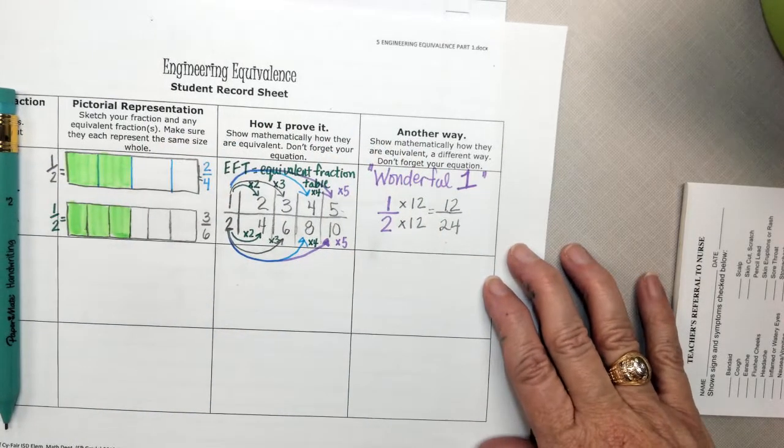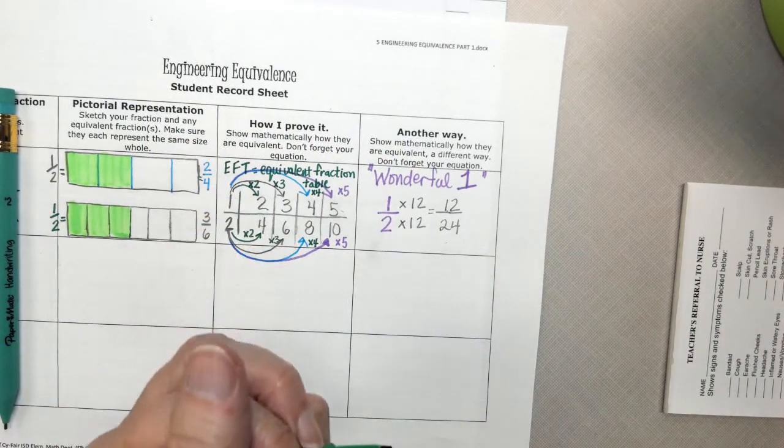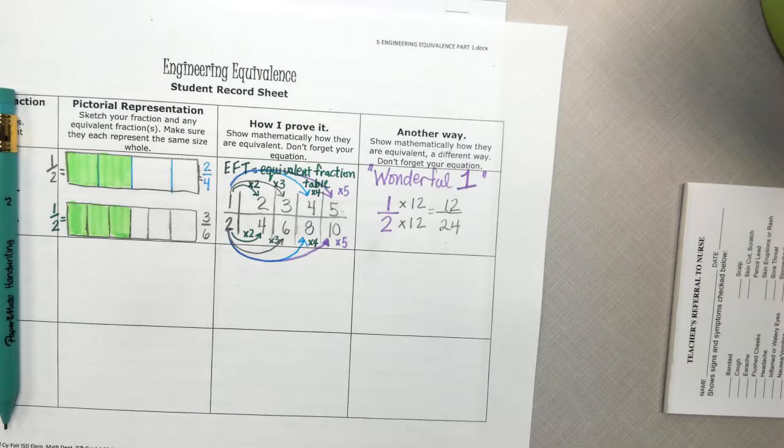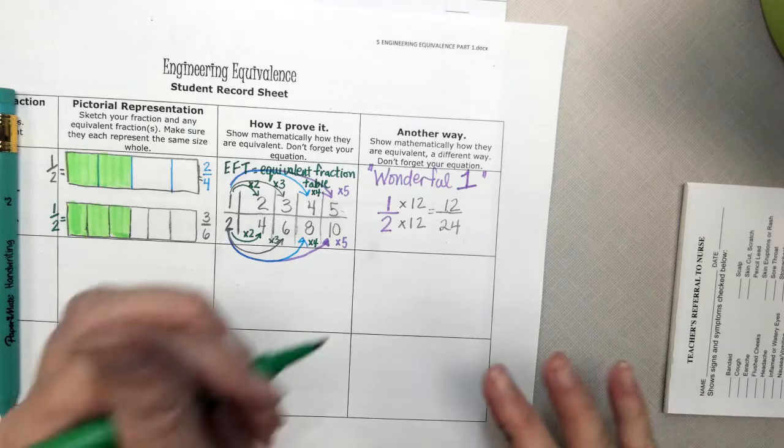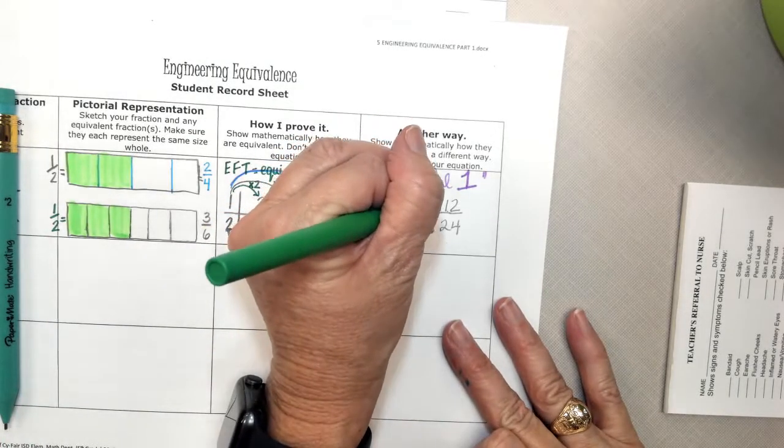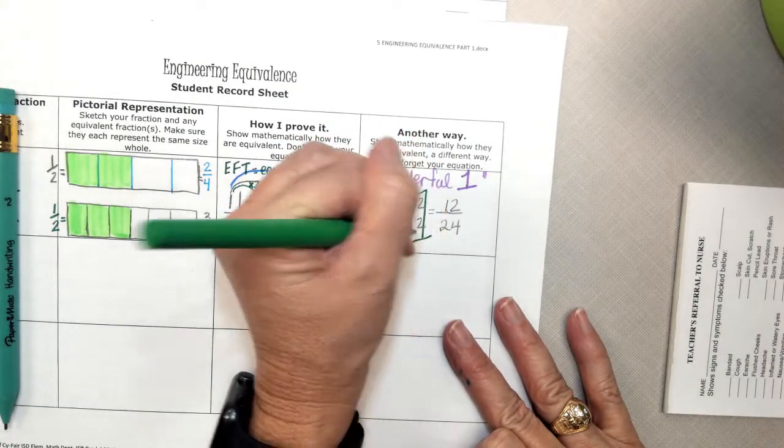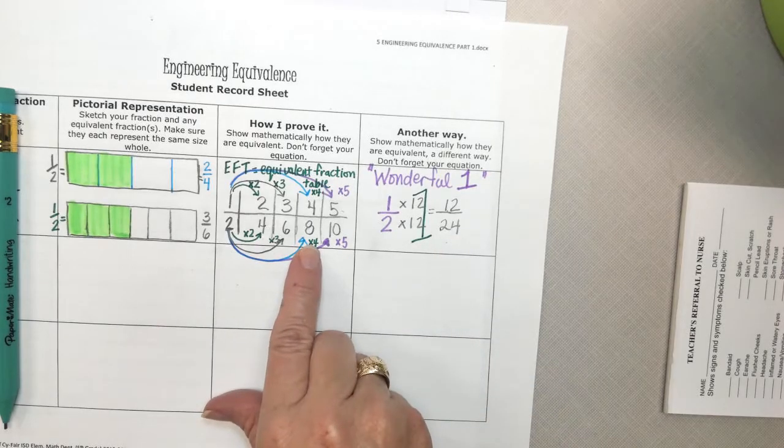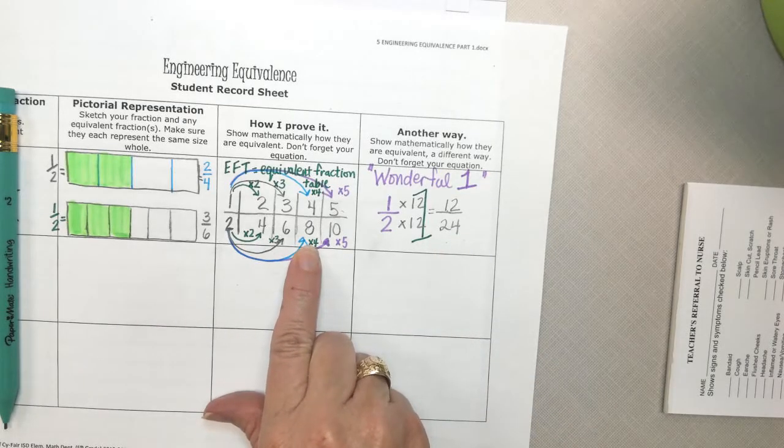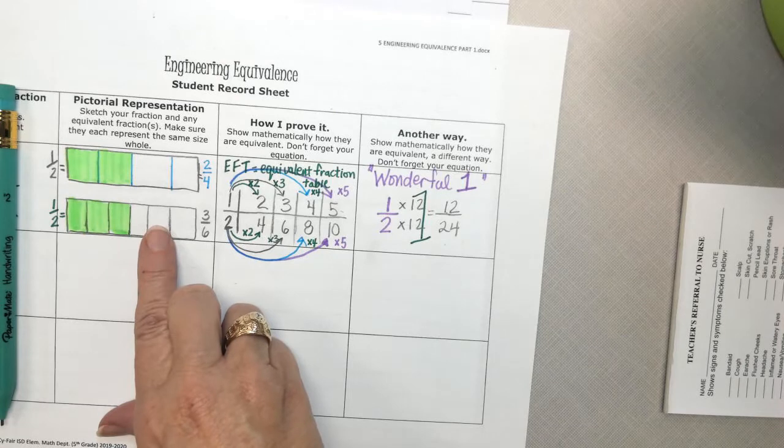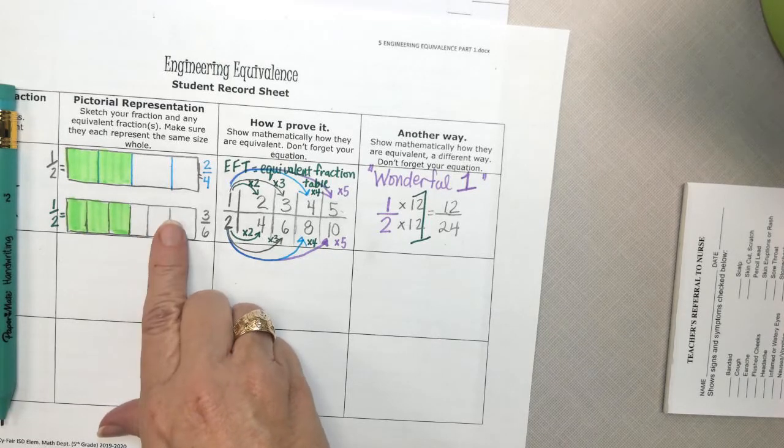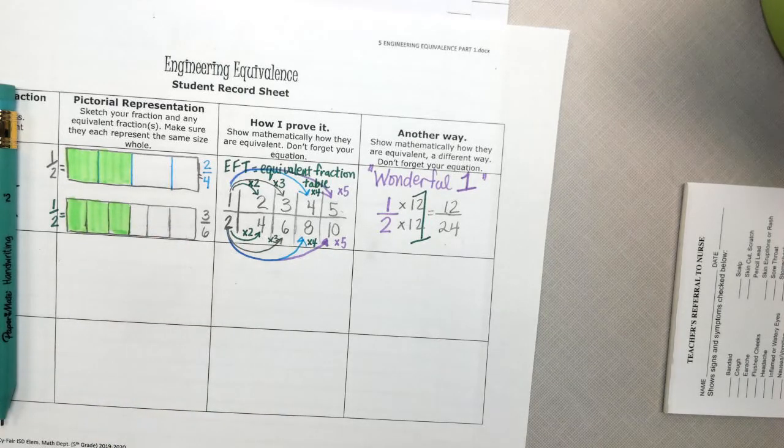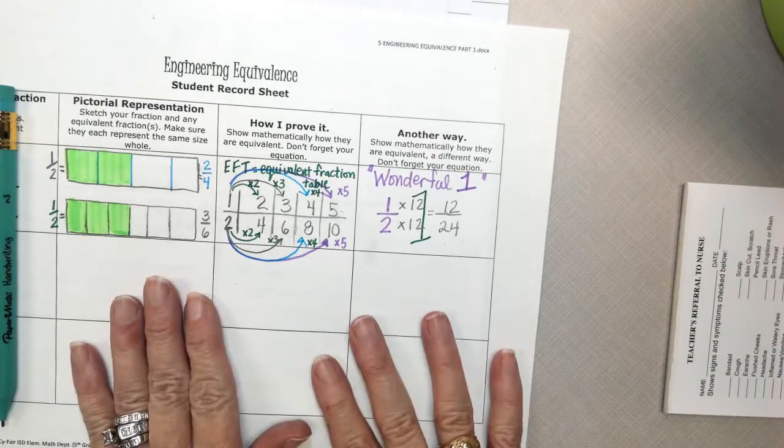And you know how we did that? Because you guys told me a while ago that any time you had the same number on top and on bottom, that's really a number 1. And isn't that way more efficient than making an equivalent fraction train? Isn't that way more efficient than making a table and a picture? It's going to be way easier.